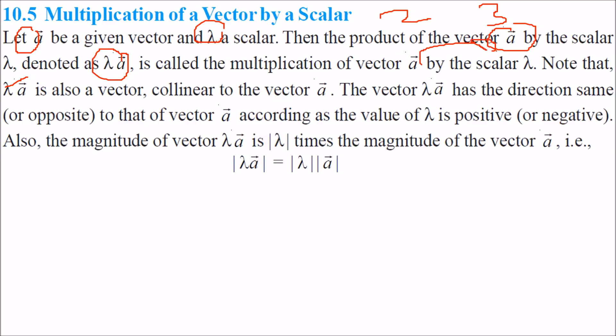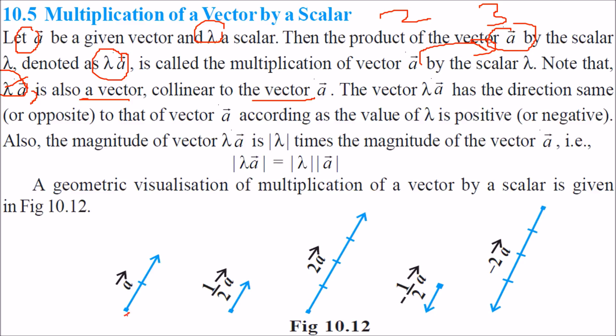λa is a vector that is collinear with the vector a. I'll show you: if this is a and you multiply by a scalar like ½, it will be half of this; if you multiply by 2, it will be twice of a.